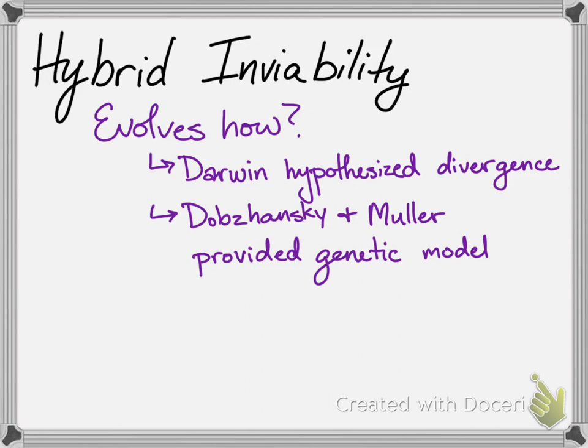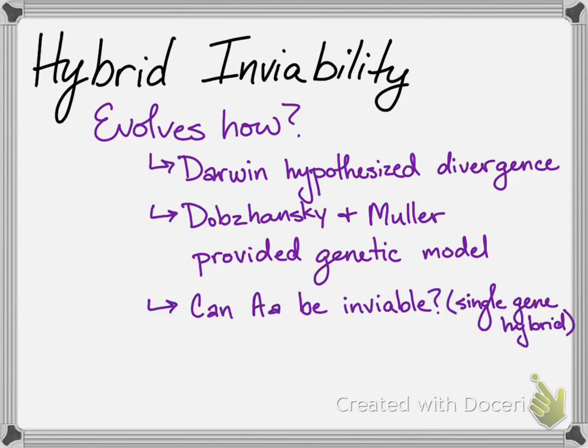Both Dobzhansky and Mueller independently formulated a model explaining how hybrid inviability could evolve without natural selection acting against the heterozygous hybrids.